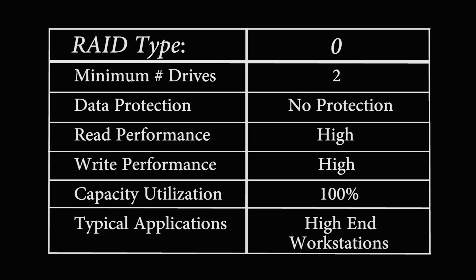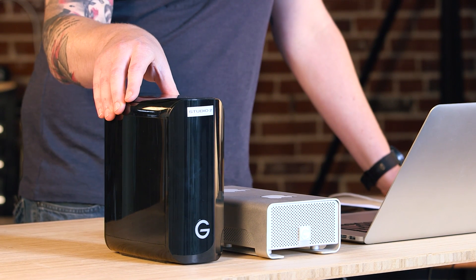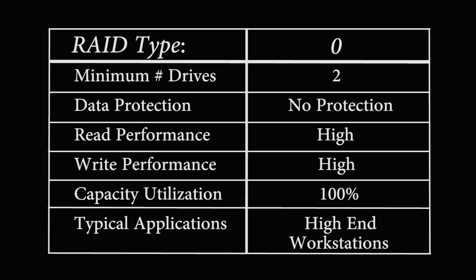You'll notice that capacity utilization is 100%. So if you have a drive set to RAID 0 — say a 6TB drive like the one shown here — you will have the full 6TB available. Typical applications for RAID 0 include higher-end workstations, video editing, motion graphics, and computers doing a high degree of rendering.